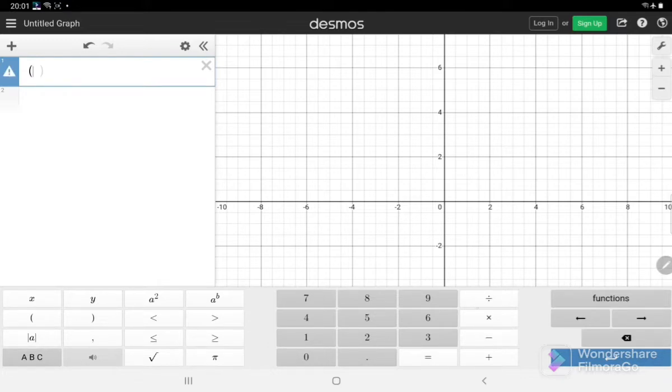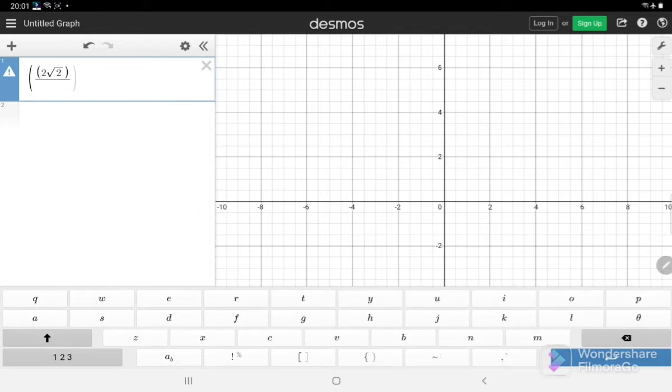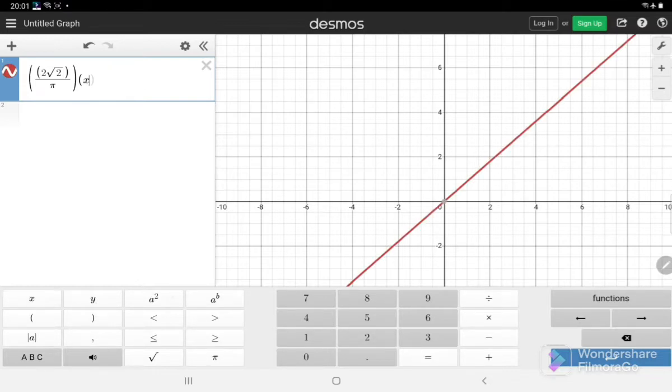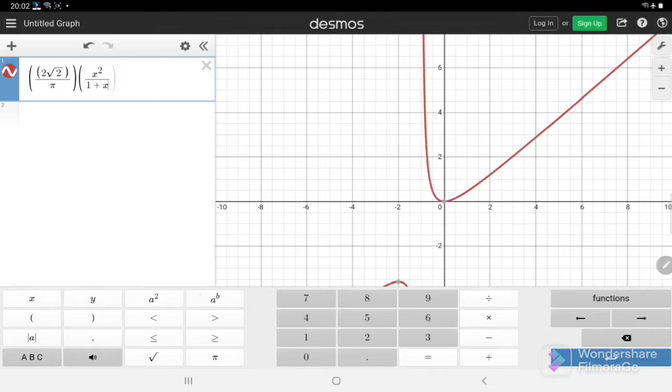The equation was for P, that was 2√2 divided by π times x² divided by (1+x⁴). So this was the probability density.